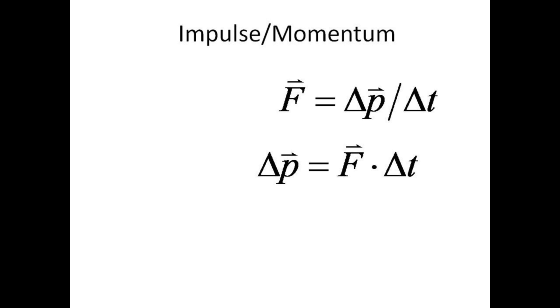Multiplying both sides by the time interval delta t gives delta p equals force F acting over the period of time delta t. Thus, the change in momentum is equal to the so-called impulse.